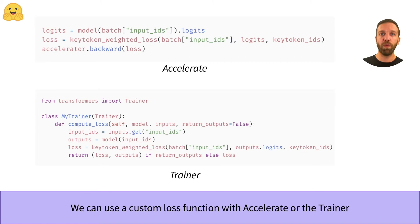In Accelerate, we just pass the input IDs to the model to get the logits and then we can call the custom loss function. After that, we continue with the normal training loop by, for example, calling backward.